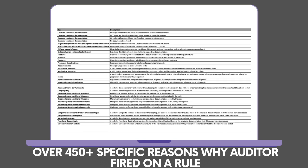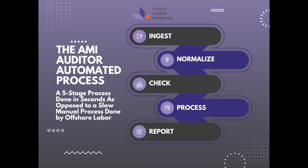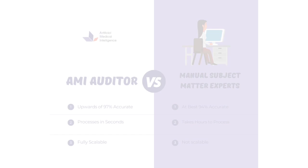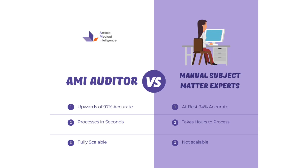Consider how long it would take a nurse coder or auditor to read through records manually — imagine reading through 300 pages. Currently, this process is offshored to India and the Philippines and suffers from low quality standards. Time and quality are both addressed with the AMI Auditor, which can average 1 minute and 30 seconds to process a 300-page length of stay — a huge time savings. Independent auditing of the AMI solution tested a random sample of records with an average of 97% accuracy, well above the maximum accuracy threshold for human subject matter experts of 94%. This application is well beyond ChatGPT or any other machine learning platform, and boundaries are in place so the AMI Auditor does not machine-learn and run wild with spurious, error-prone information.